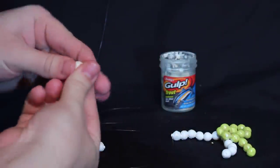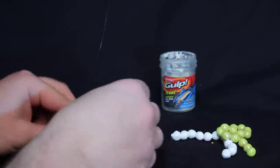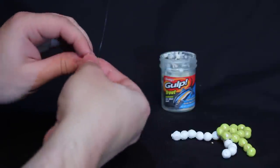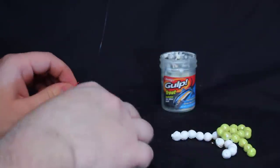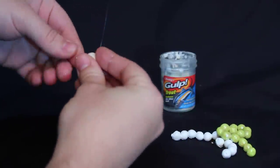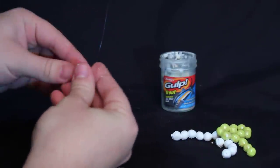This basically just wraps around your hook and you kind of sink it in there. This is a big ball—usually you'll do smaller because you want them to be able to get the hook.